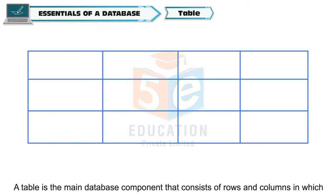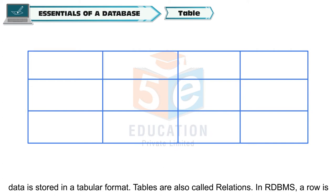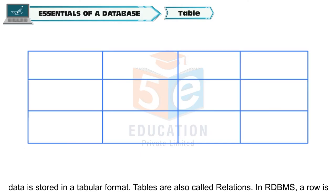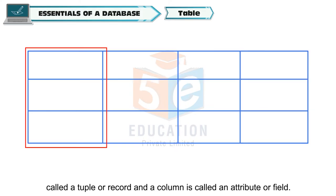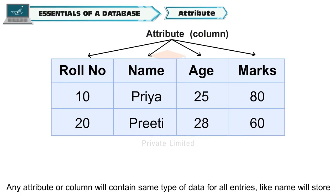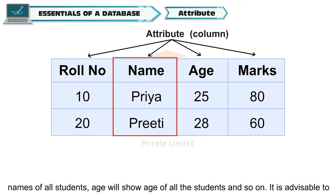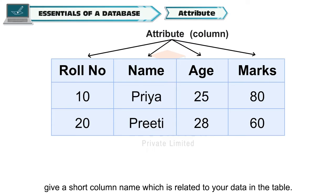Table — a table is the main database component that consists of rows and columns in which data is stored in a tabular format. Tables are also called relations. In RDBMS, a row is called a tuple or record and a column is called an attribute or field. Attribute — any attribute or column will contain the same type of data for all entries, like name will store names of all students, age will show age of all the students, and so on. It is advisable to give a short column name which is related to your data in the table.